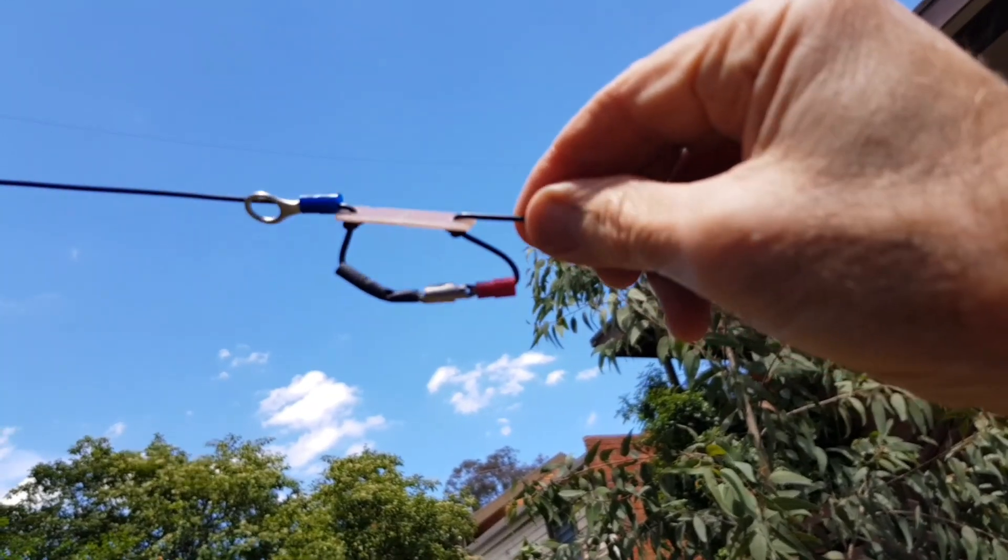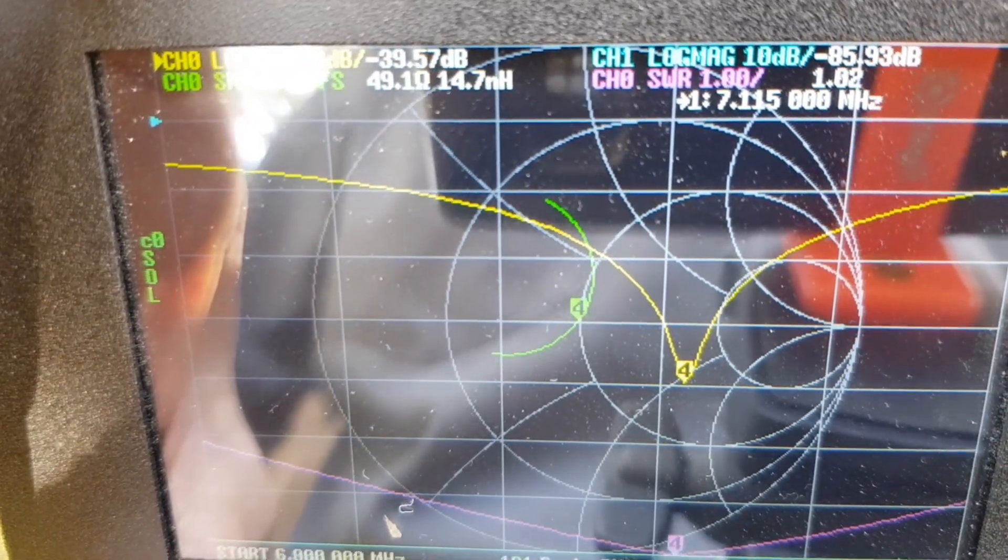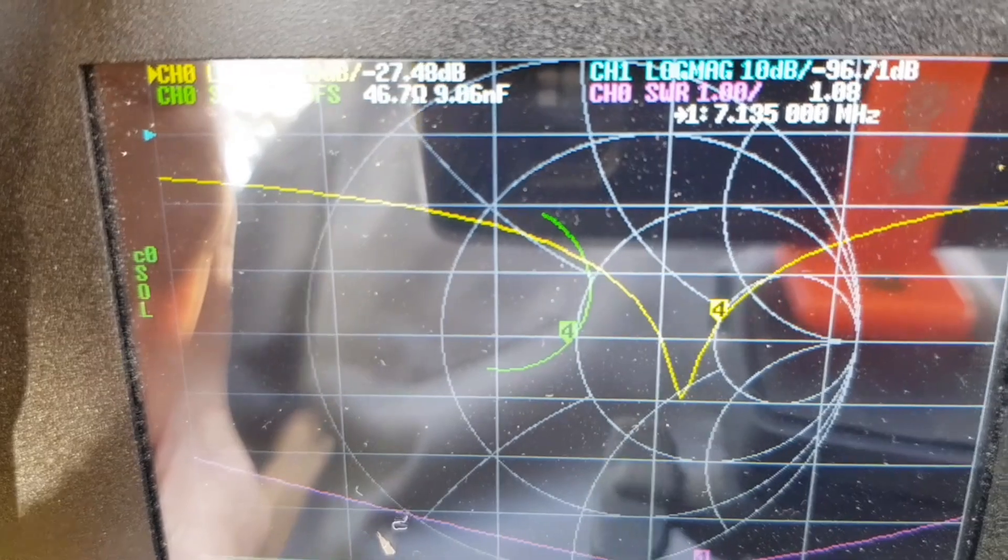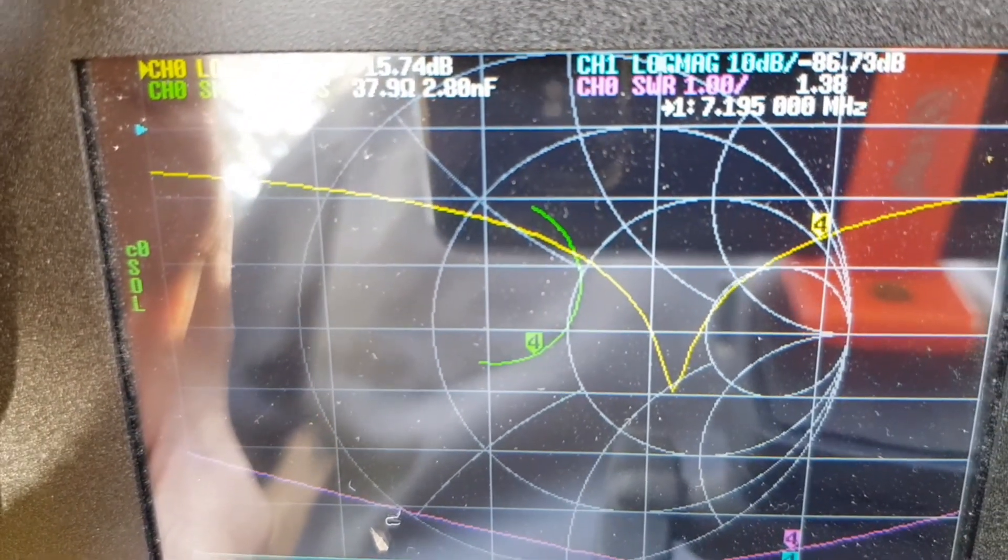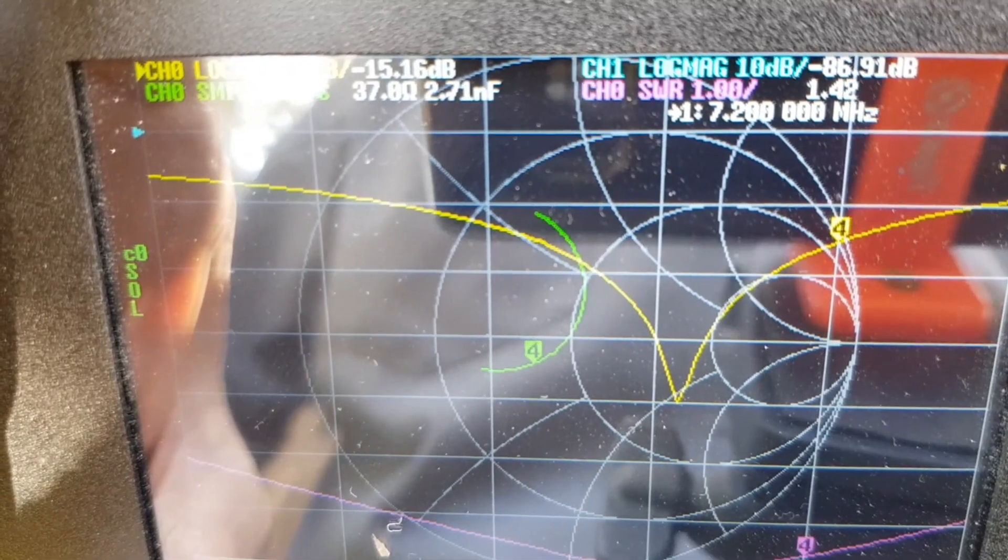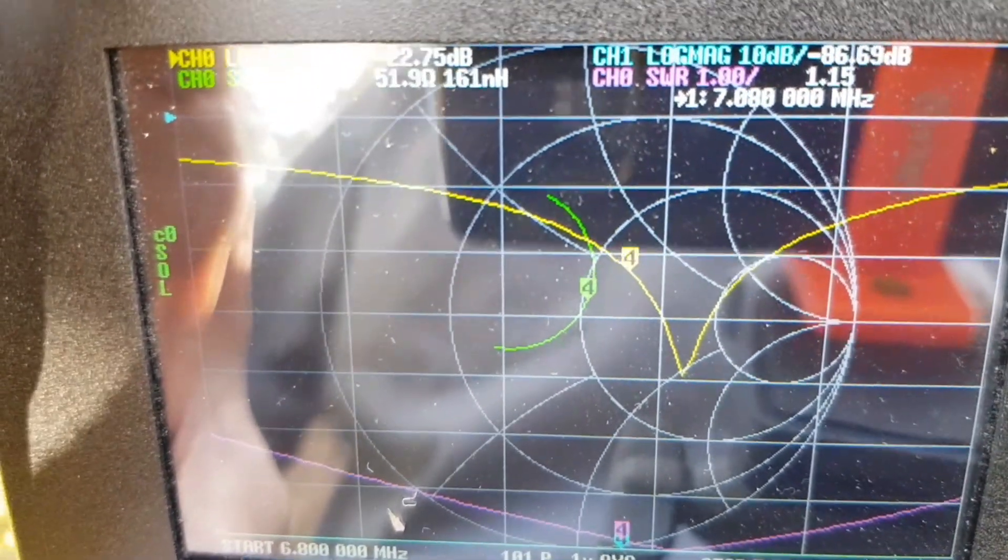So with the link closed, we can check resonance on the 40 meter dipole. And look at that, 1.02 to 1 at 7,120. Isn't that good? Up around 7,200, it's 1.4. Down at the CW end, it's about 1.2.